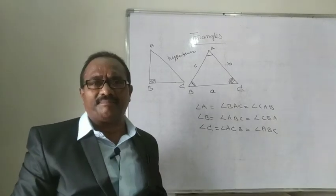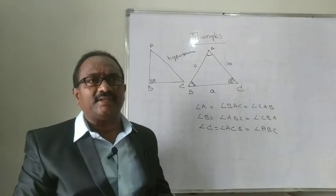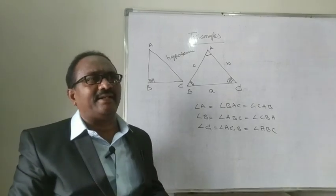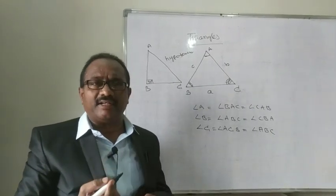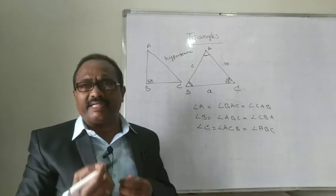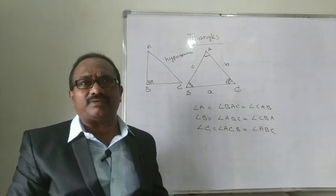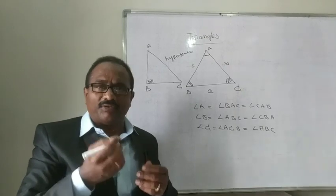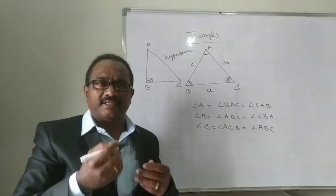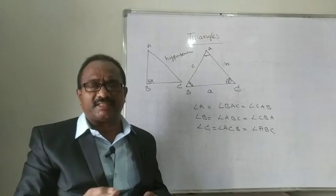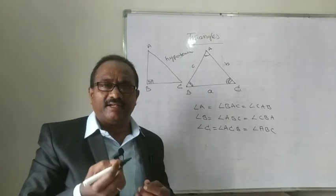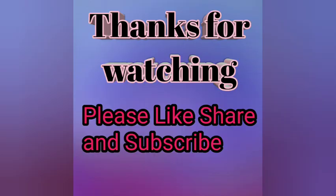So in a Right Angle Triangle, one side has a particular name and that is called the Hypotenuse. This Right Angle Triangle is used in Trigonometry, where we find Trigonometrical Ratios — that is applicable only in Right Angle Triangles. Our next topic is Trigonometry, where we are going to discuss some problems and definitions in the Trigonometry topic.